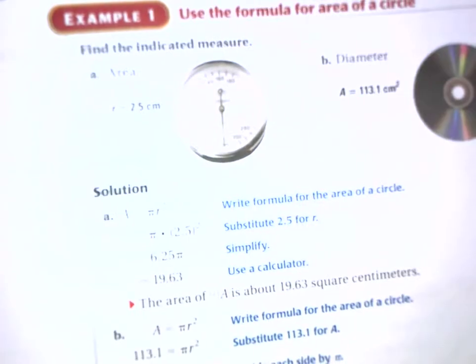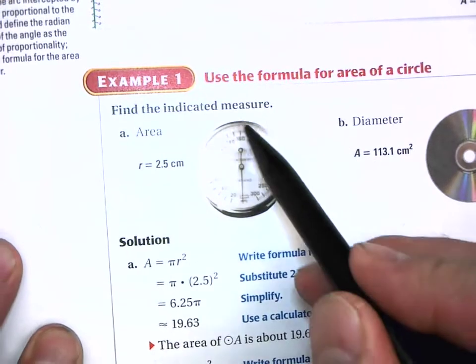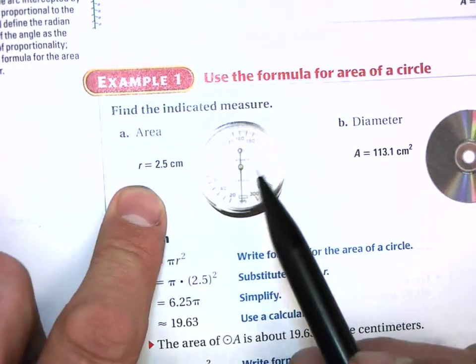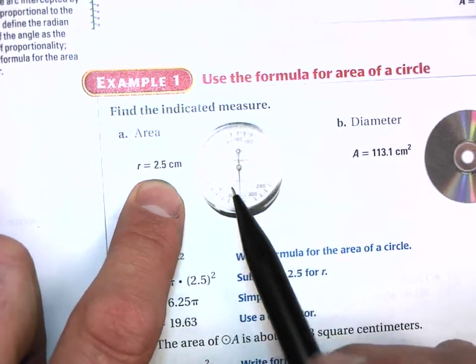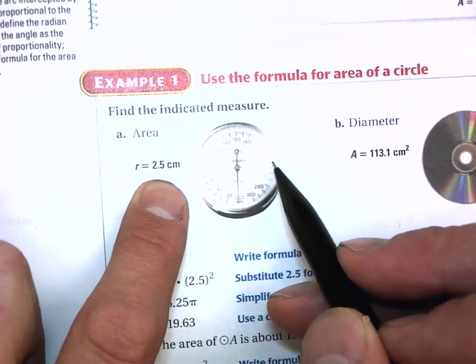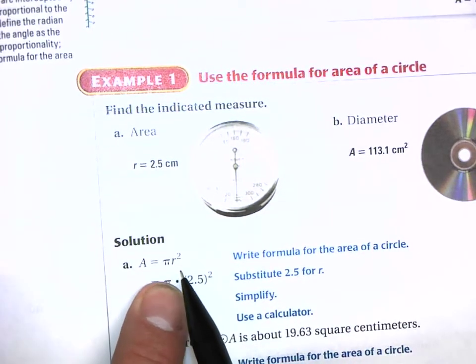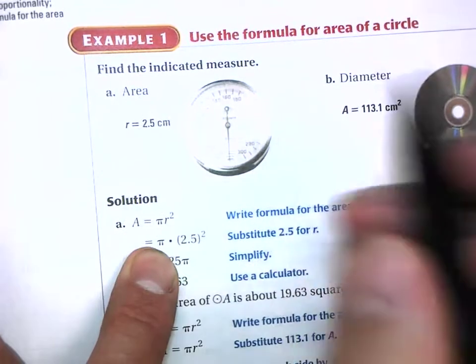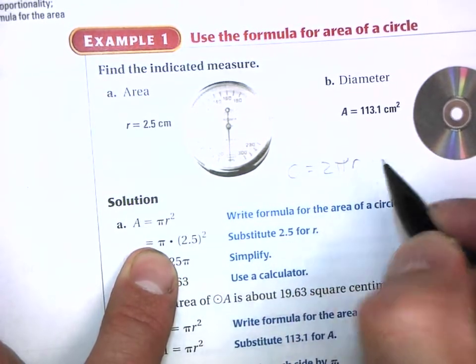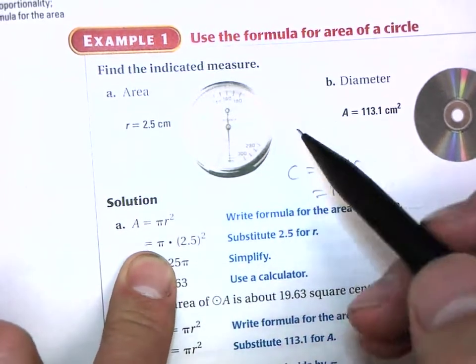Let's look at an example of plain area of a circle. We want to find the area of this dial, and they're telling us the radius is 2.5 centimeters — going from the center out to the circle. We use the equation area equals πr². Sometimes they'll give you the diameter instead, which in this case would be 5 centimeters, so you'd need to divide by 2 to get the radius before plugging in.